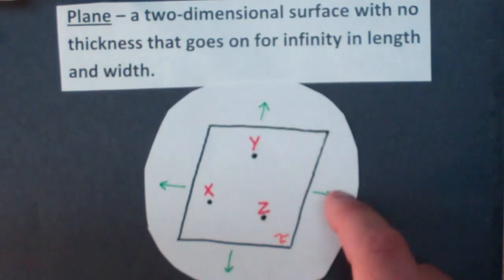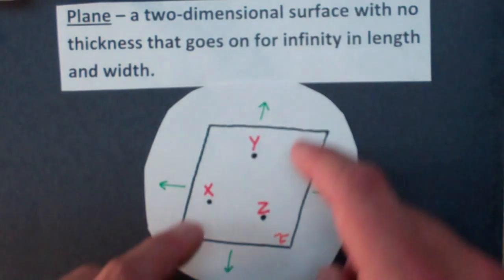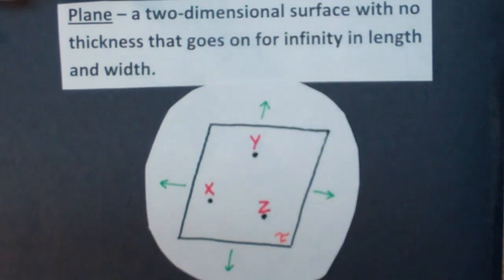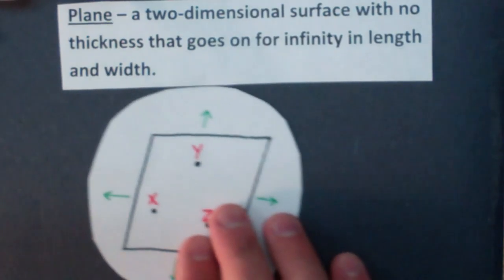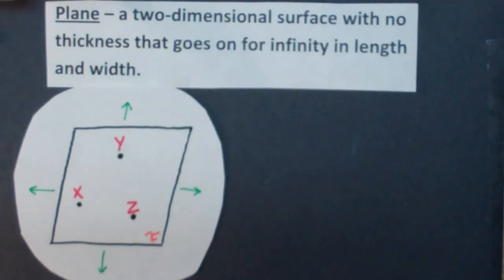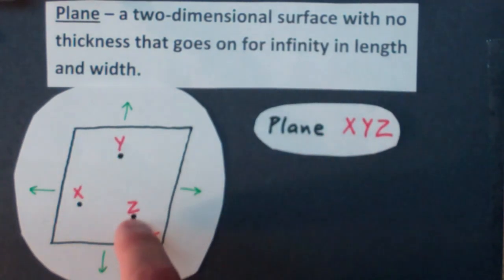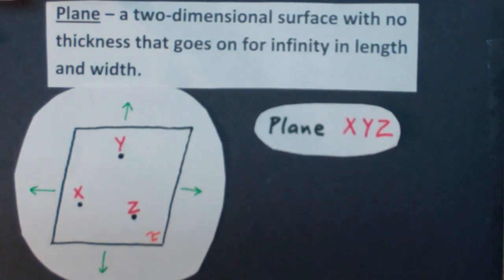Like you literally couldn't measure the thickness. Now you generally don't see arrows on a plane, but I wanted to indicate that these, in theory, these sides go on forever in both directions. So what we have here is we have a plane, and you need three points to name a plane.